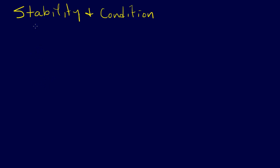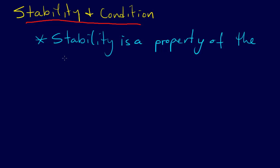Stability and condition are two terms that we use when we're talking about solving problems numerically. And the first thing you need to know, and this is really important, is that stability is a property of the algorithm.